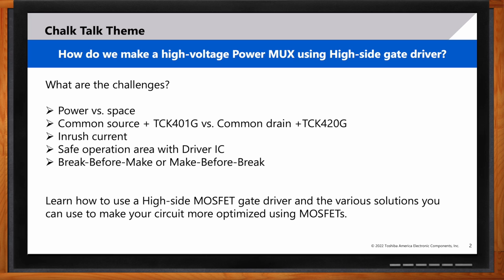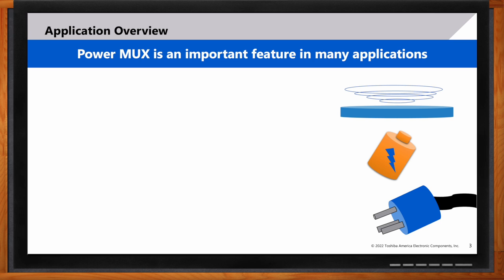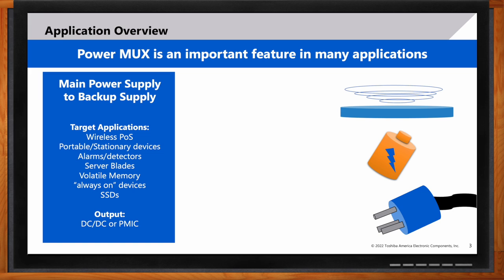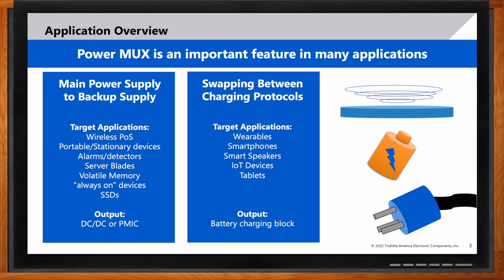What kind of applications would benefit from this kind of power multiplexing? Two application types can benefit from a power mux or power OR-ing solution. Power muxing or power OR-ing is used when we need to switch between the main power supply and a backup power supply, or in applications with multiple charging protocols. Applications like point-of-sale devices, notebook PCs, security detectors with backup during outage, and servers and SSD devices — the common denominator is their output goes to a DC-DC converter or a PMC device.